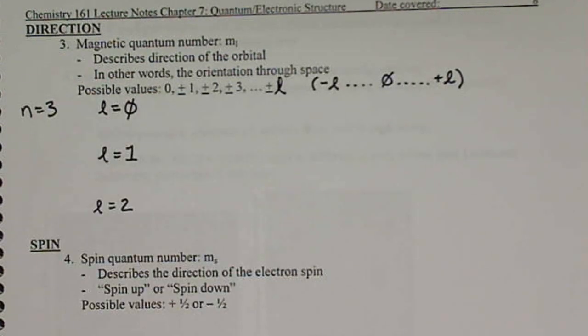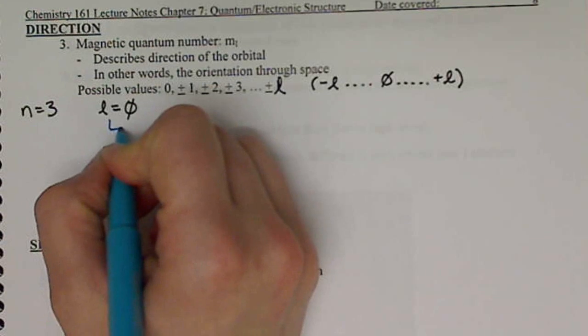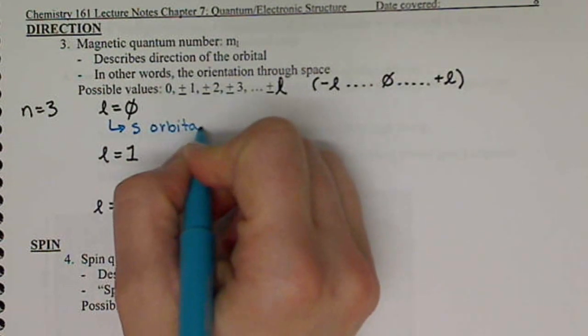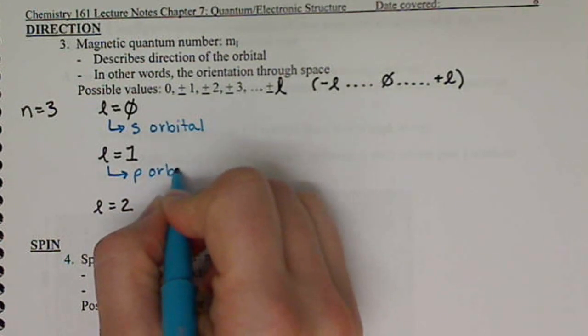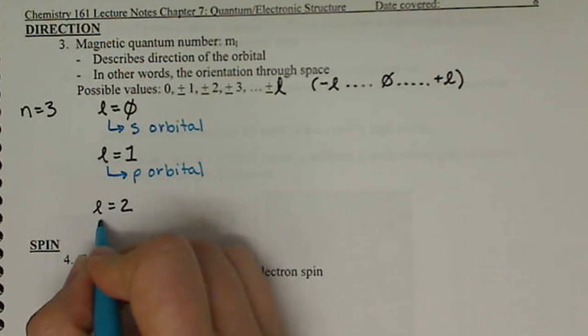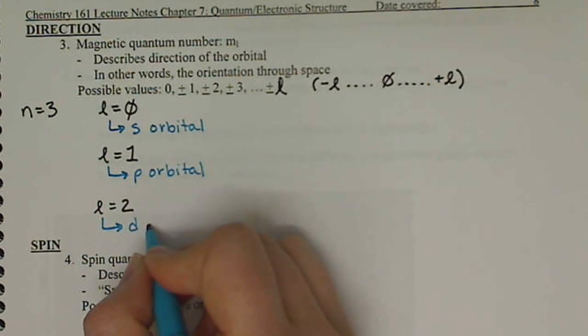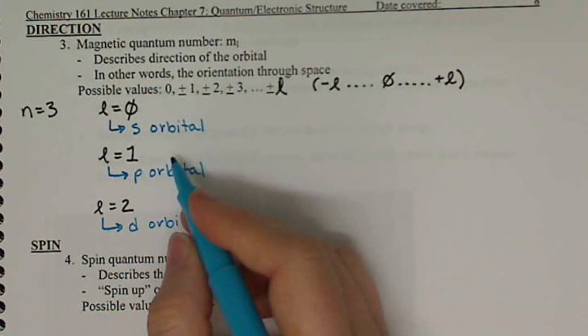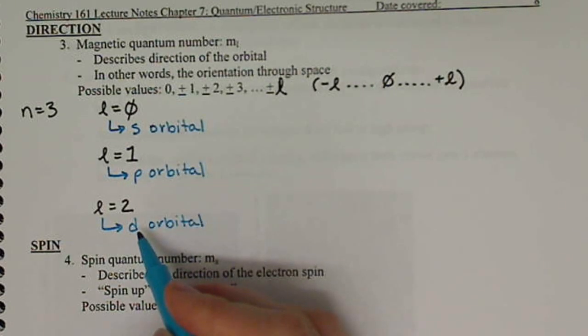When l equals zero, this means we have an s orbital. When l equals one, we have a p orbital. And when l equals two, we have a d orbital. That's just the basic shape: we have a spherical shape, a dumbbell shape, and a double dumbbell shape.